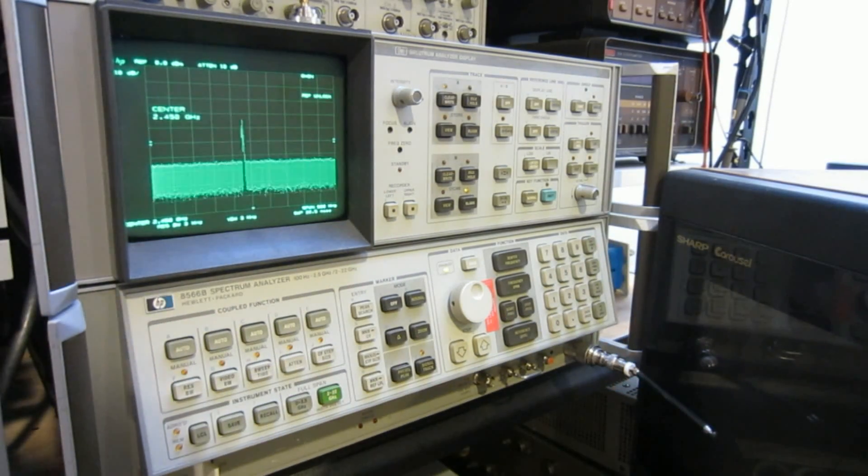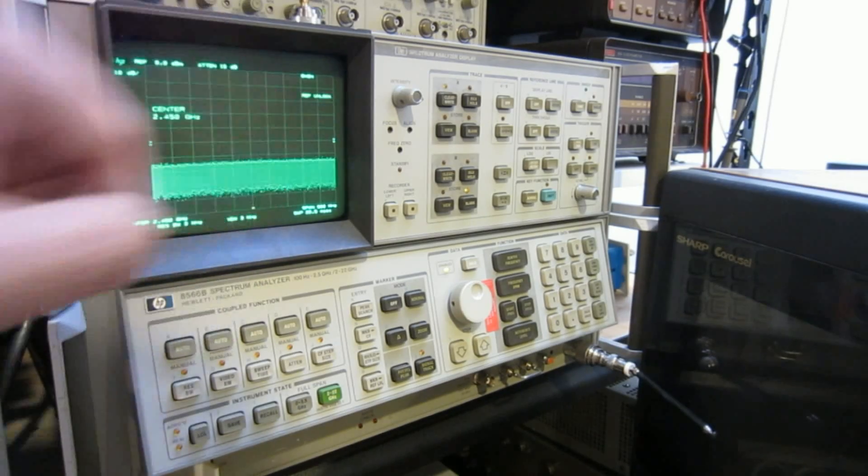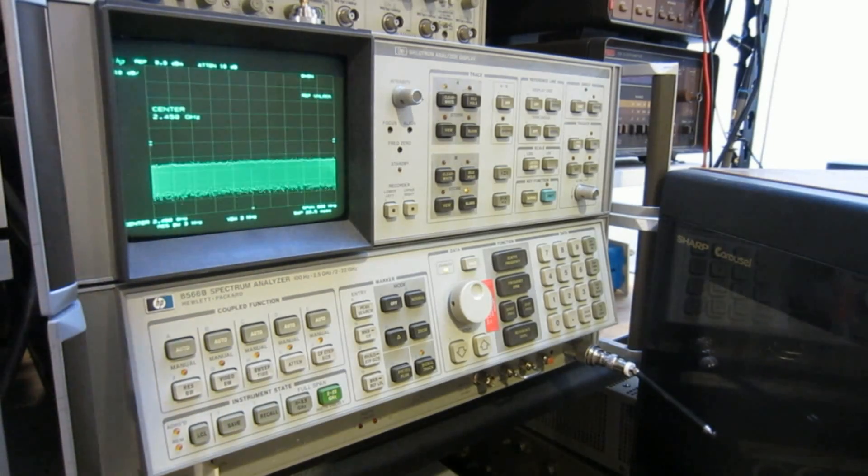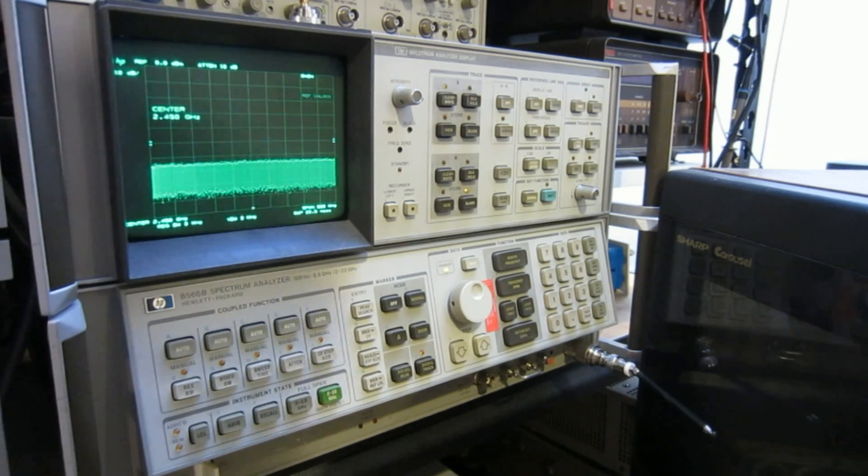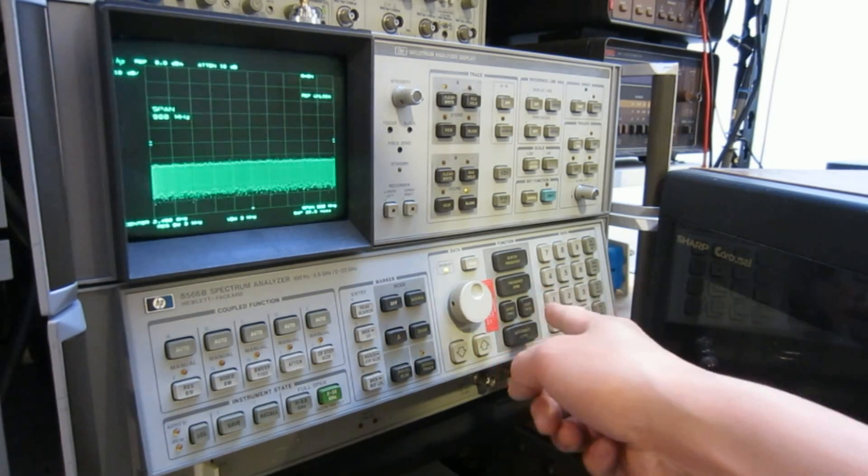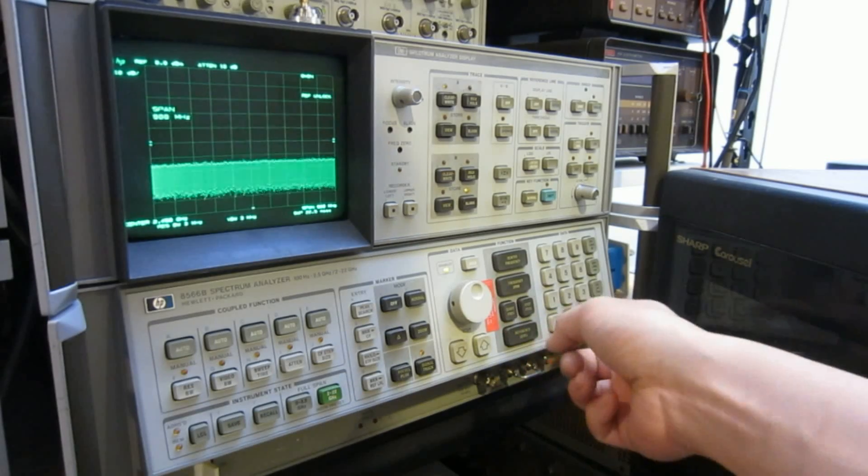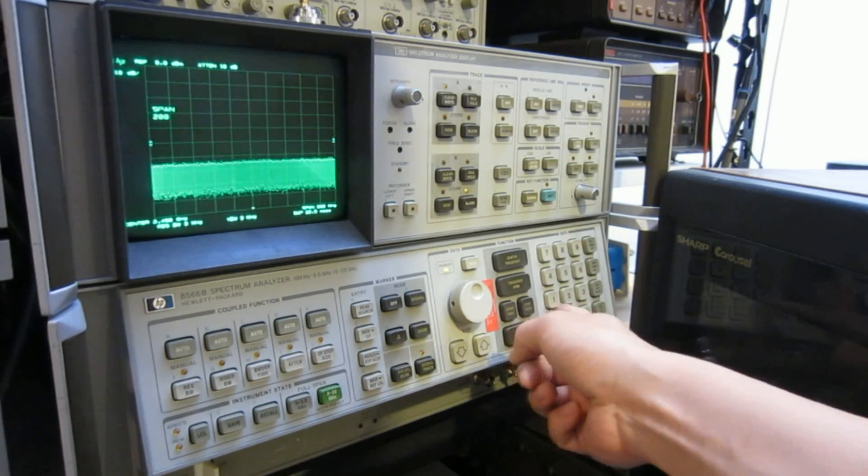By the way, you can see the reference unlock currently is flickering. That's because I just powered it on, and the oven hasn't been up to temperature yet. But in a while, it will go off. So right now, the frequency span is at 900 megahertz. Let's reduce it to 200 megahertz.